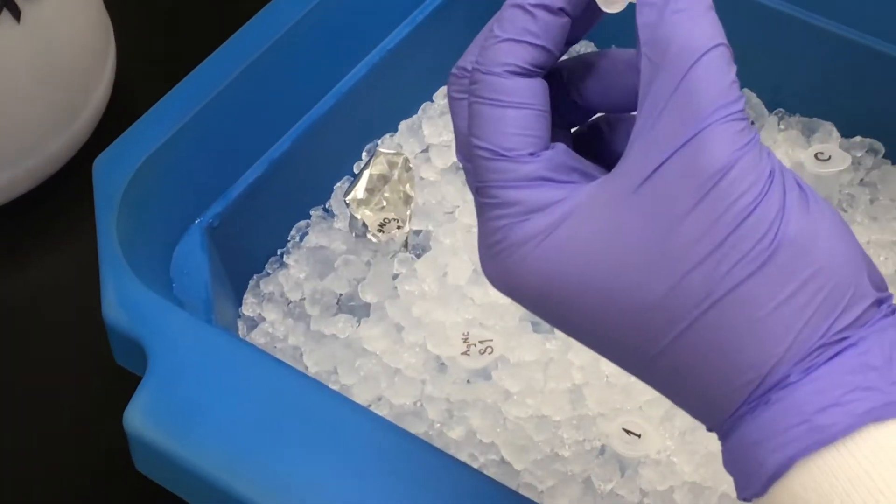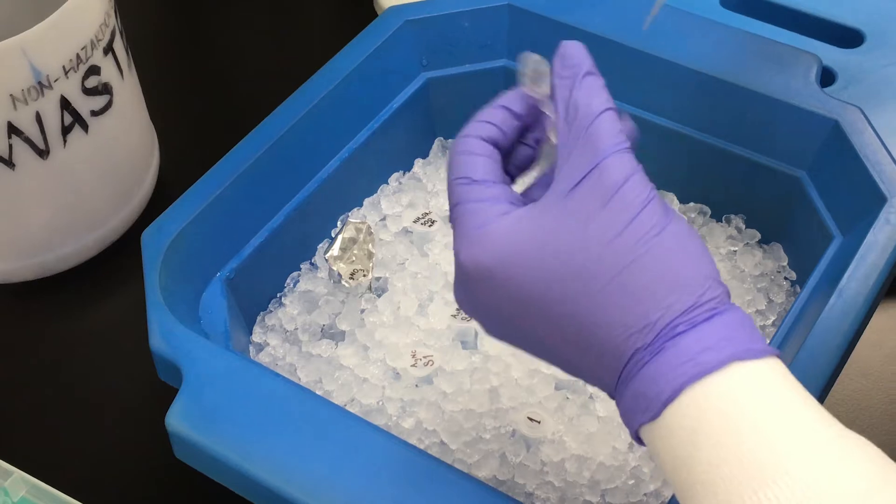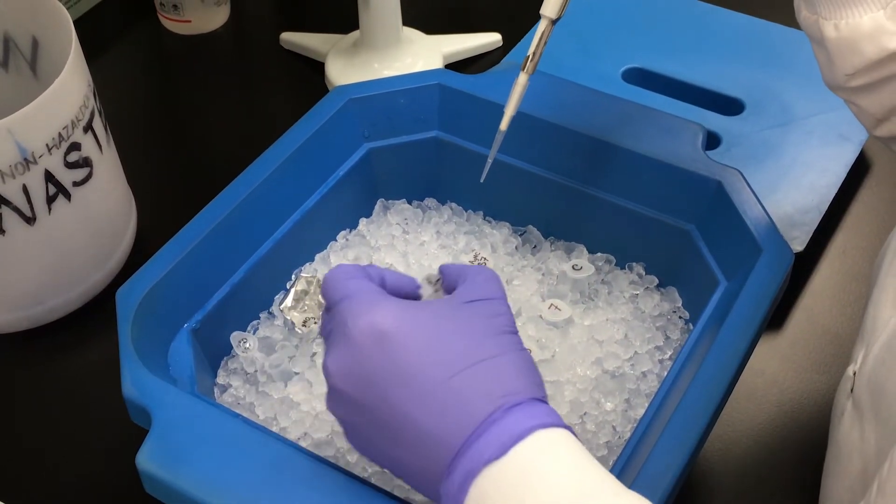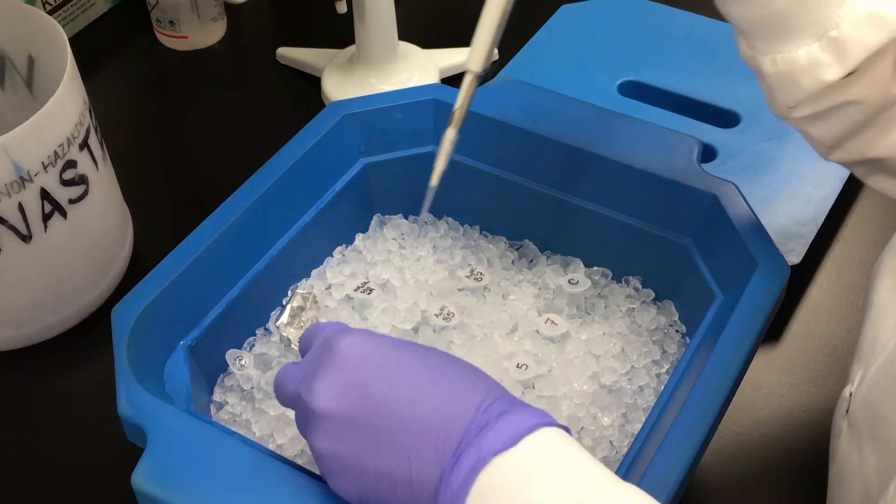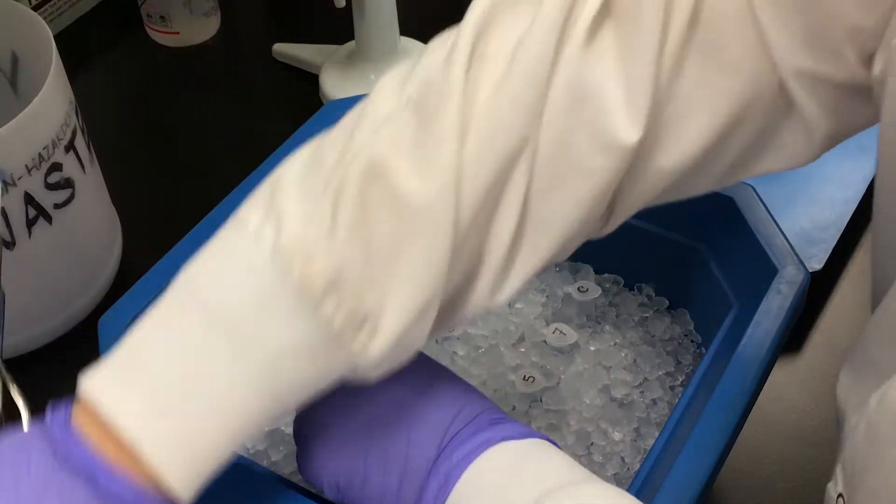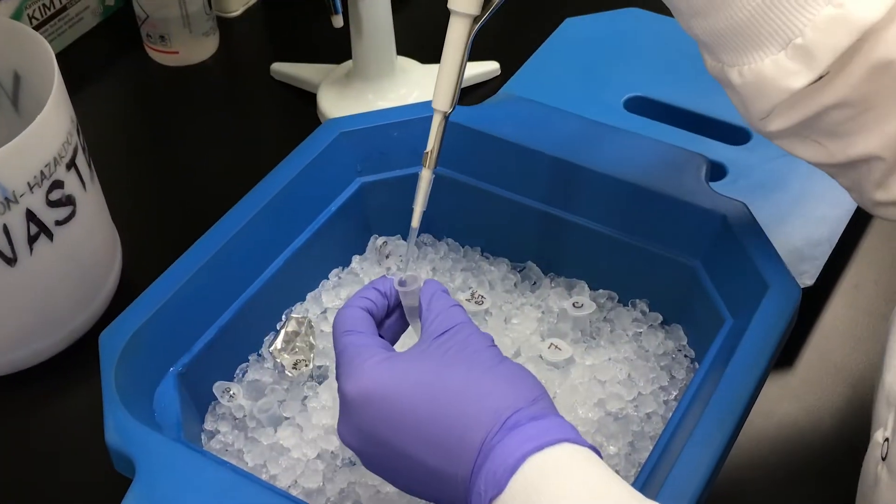The first step is to dilute the DNA template solutions with double deionized water, labeled here as DDIH2O. The volumes needed are calculated ahead of time based off the absorbance of the original DNA template stock to achieve a final concentration of 30 micromolar.